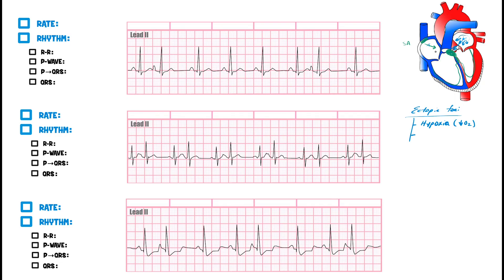Other causes include electrolyte abnormalities such as hypokalemia, excess catecholamines like elevated epinephrine or norepinephrine, and stimulants such as cocaine or methamphetamine. All of these things can agitate atrial cells and trigger them to fire before the SA node fires.